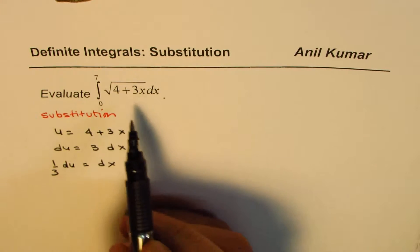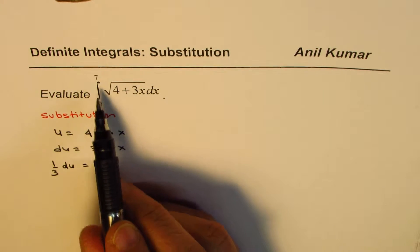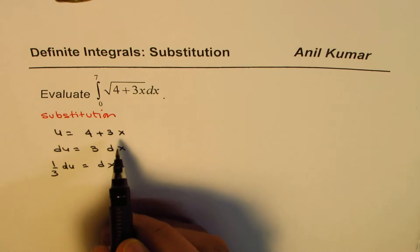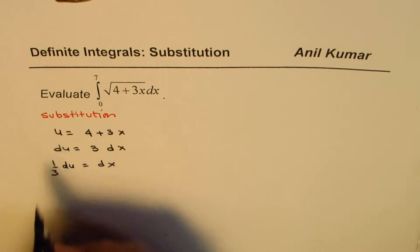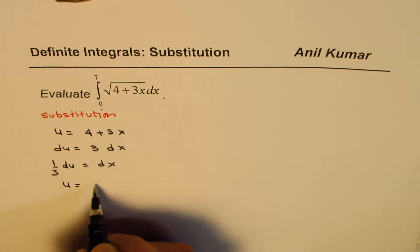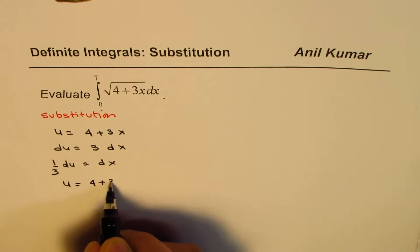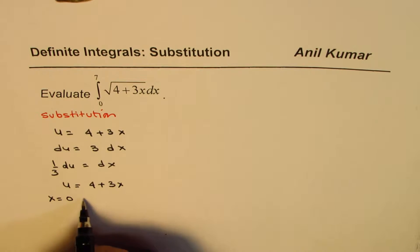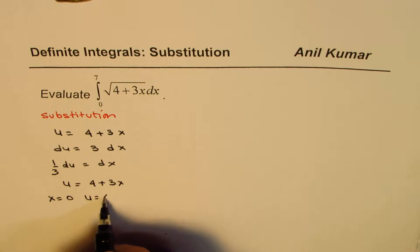Now, whenever you make a substitution, the limits of the integral also change. Let's figure out, if x is 0, what is the value of u? We are substituting u equals to 4 plus 3x. Now, if x is equal to 0, in that case, u will be equals to 4.